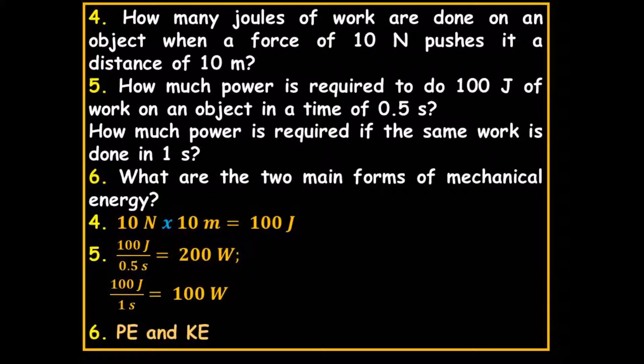What are the two main forms of mechanical energy? If you understand this, you are way ahead of most people. The two main forms of mechanical energy are potential energy and kinetic energy. Potential energy is a little weird — what we usually study is gravitational potential energy, based on the height of something.